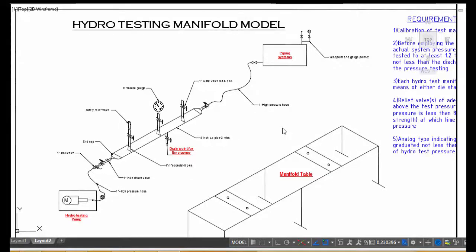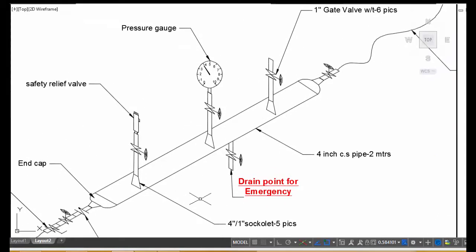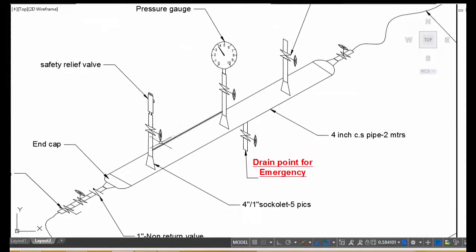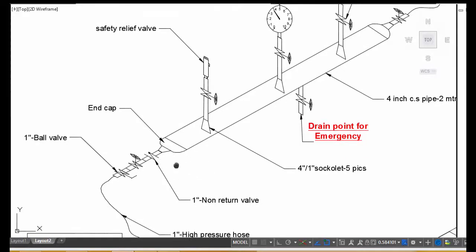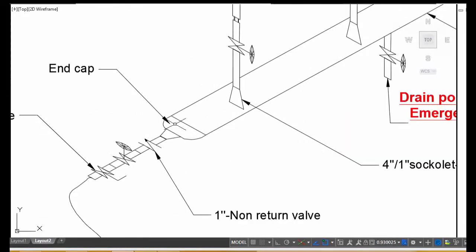Hi friends, this video explains a hydro testing manifold model and how to fabricate a hydro testing manifold for a piping system. This four-inch pipe has both sides welded to end caps. On one side, this is a four-by-one sacolette.